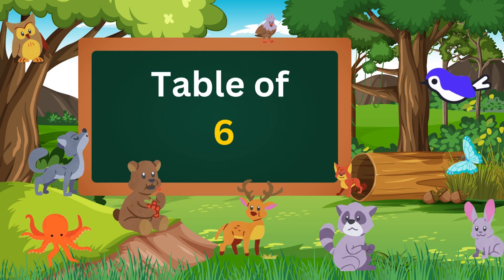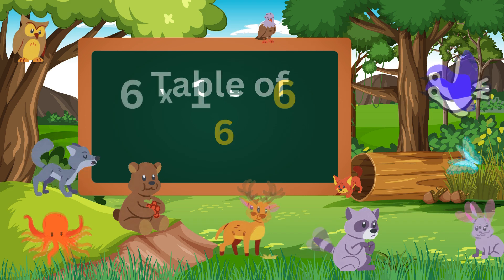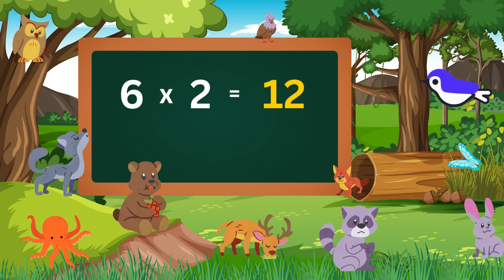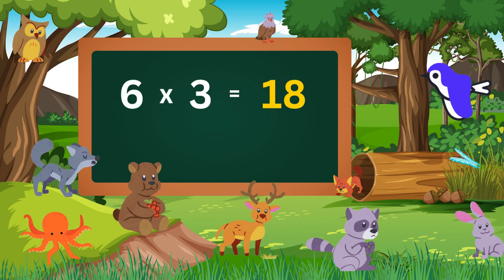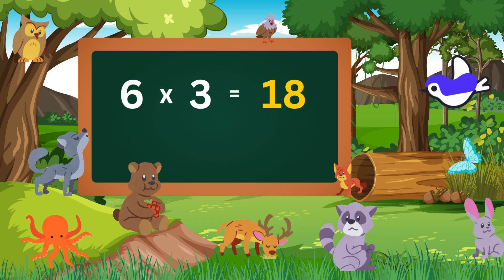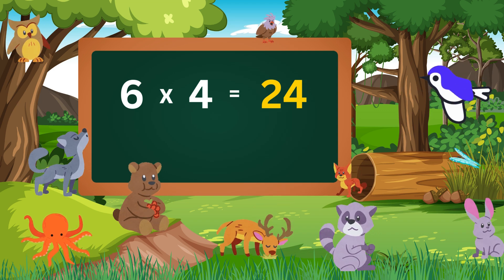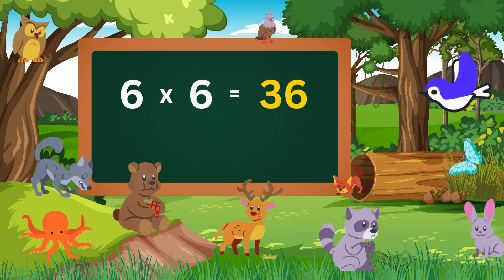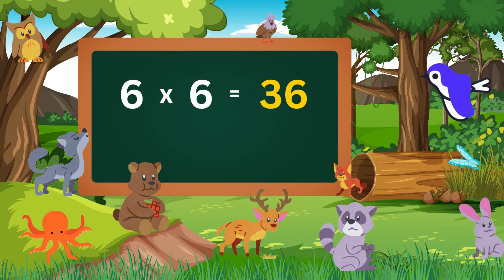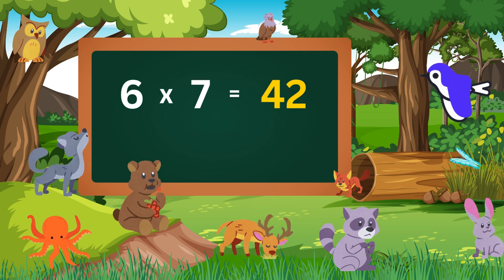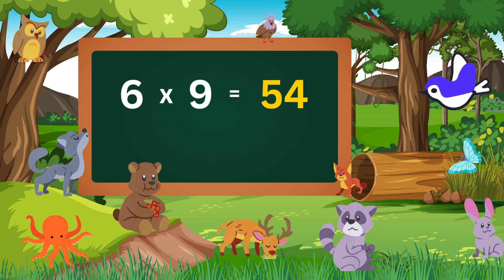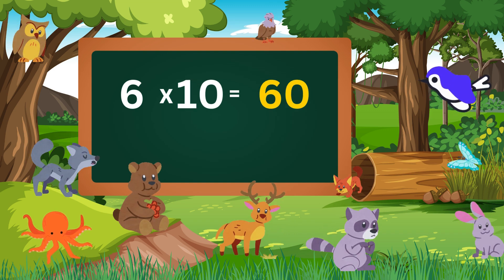Table of six. Six ones are six. Six twos are twelve. Six threes are eighteen. Six fours are twenty-four. Six fives are thirty. Six sixes are thirty-six. Six sevens are forty-two. Six eights are forty-eight. Six nines are fifty-four. Six tens are sixty.